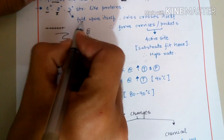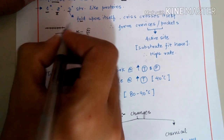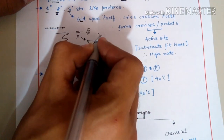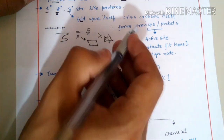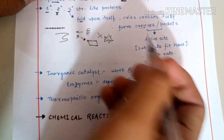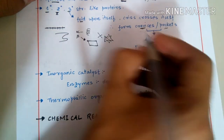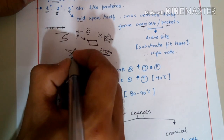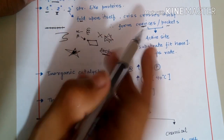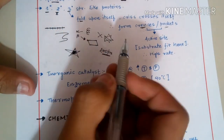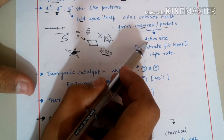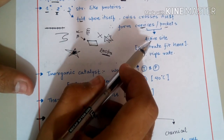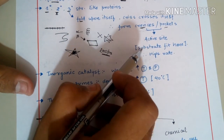In the tertiary structure, the chain of amino acids folds upon itself, forming crisscross arrangements that create crevices, pockets, or loops. One particular pocket is known as the active site of the enzyme. The active site is the position on the enzyme at which the substrate binds.